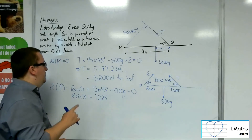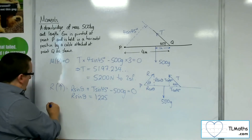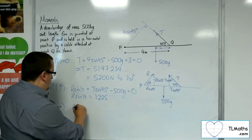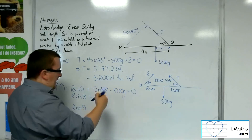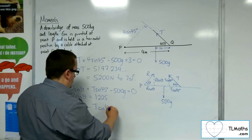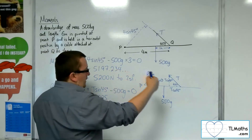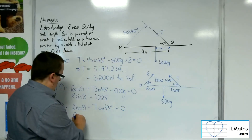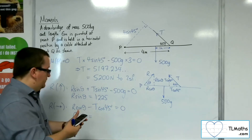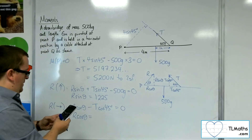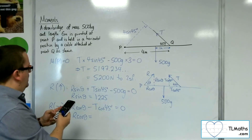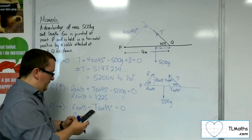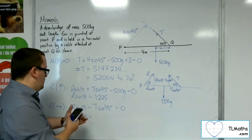Now resolving horizontally, taking to the right as positive: I've got R cos theta minus T cos 45, and I haven't got any other horizontal forces. That's got to be equal to 0. So R cos theta equals T cos 45. Going back to the calculator — divide by 4, divide by sine 45, then times by cos 45 — that gives R cos theta equals 3,675.